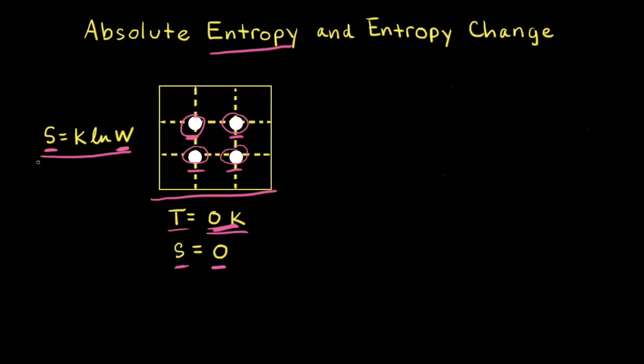When we plug the number of microstates W equal to one into the Boltzmann equation, the natural log of one is equal to zero, which means that the entropy is equal to zero at zero Kelvin for this pure crystalline substance. This is called the third law of thermodynamics.